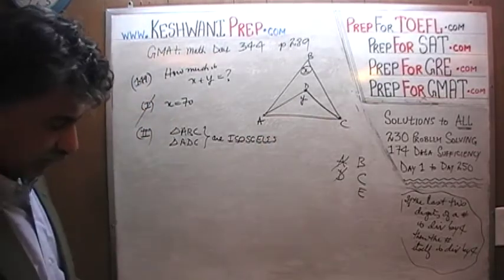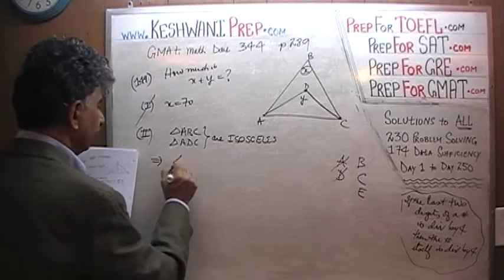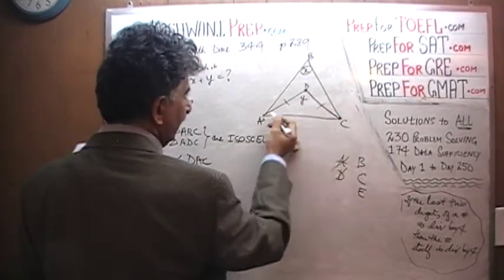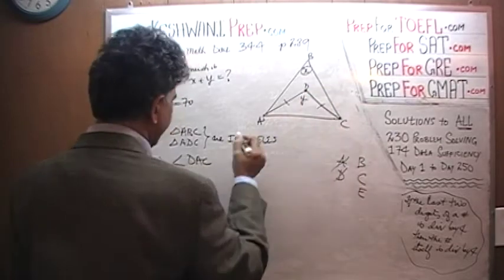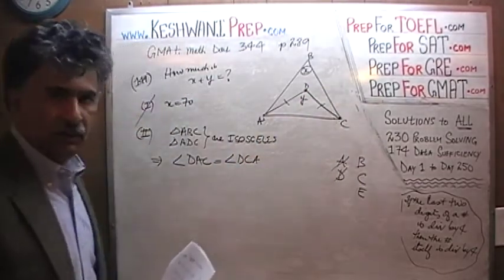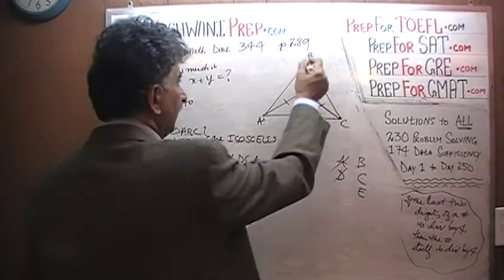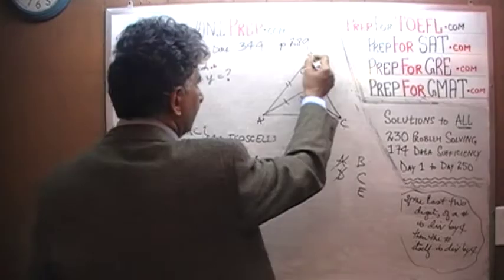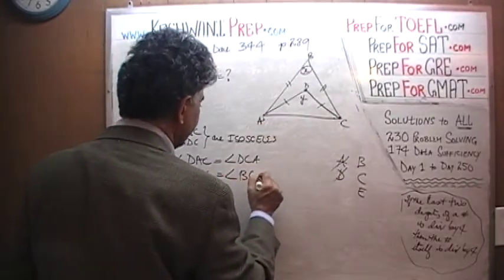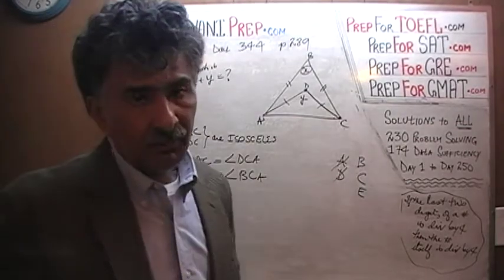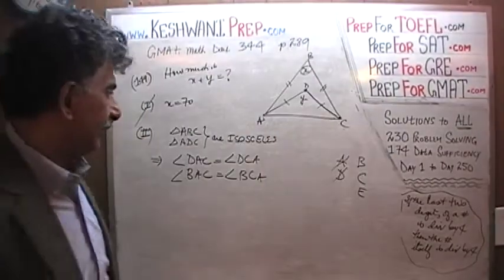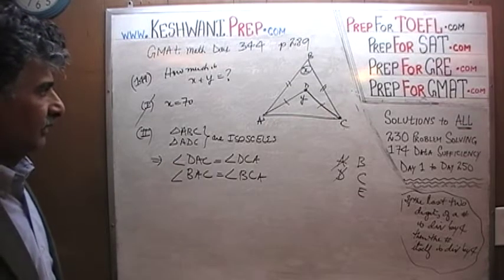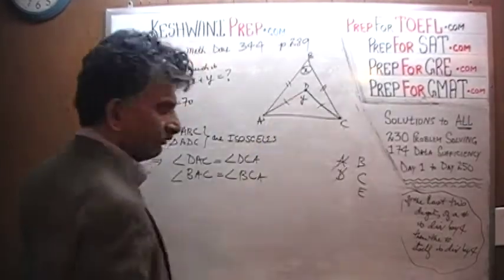What do we get out of that? It implies that angle DAC has to equal angle DCA because the two sides are equal. Another thing we get is that angle BAC has to equal angle BCA. But that by itself is not going to get us anywhere in figuring out the sum of x and y. It doesn't even tell us the value of y, let alone x. Simply knowing that the triangles are isosceles does not help us at all.